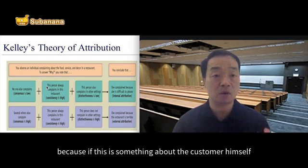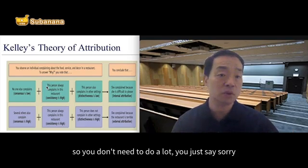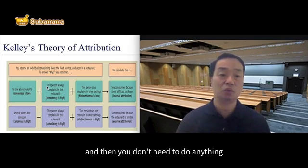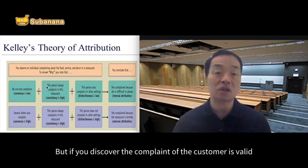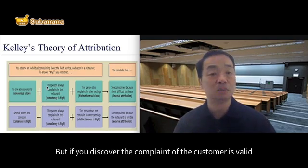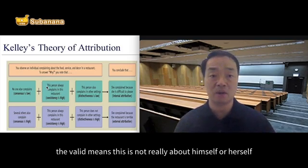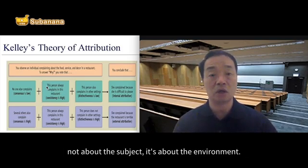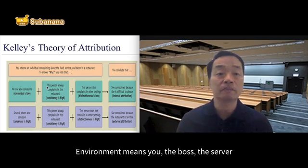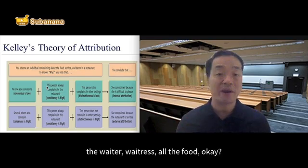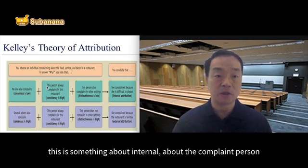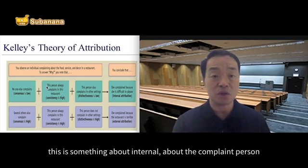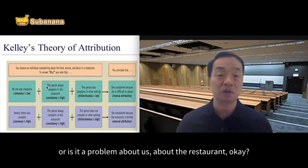Because if this is something about the customer himself, you don't need to do a lot — you just say sorry, because there's an internal problem with him. But if you discover the complaint of the customer is valid — meaning this is not really about the customer themselves, it's about the environment — meaning you as the boss, the server, the waiter, the waitress, and the food — then you will need to determine whether this is something internal about the complaint person, or a problem about us, about the restaurant.